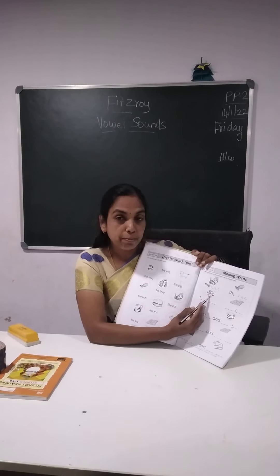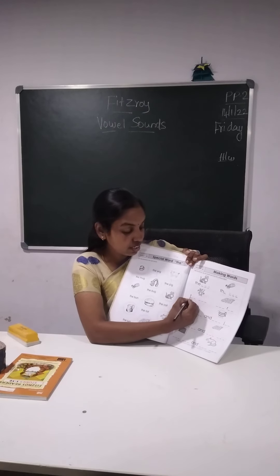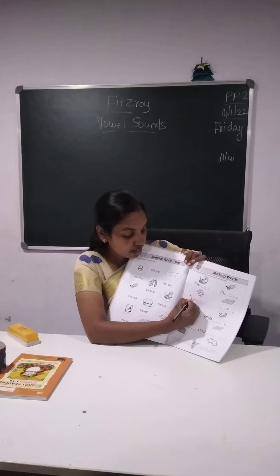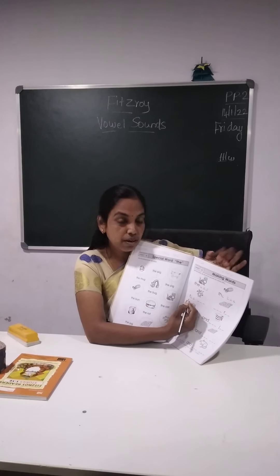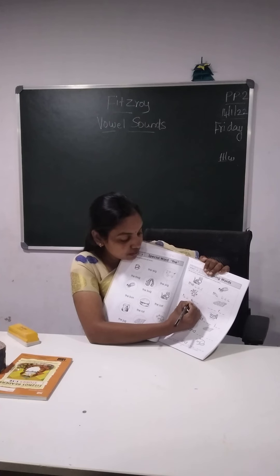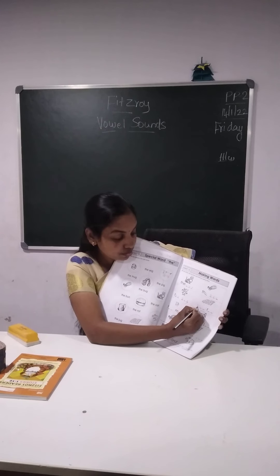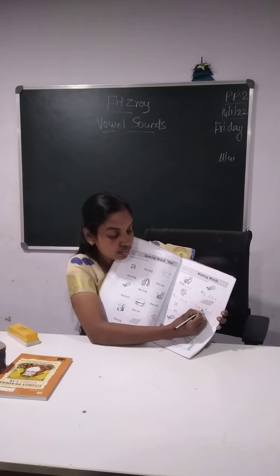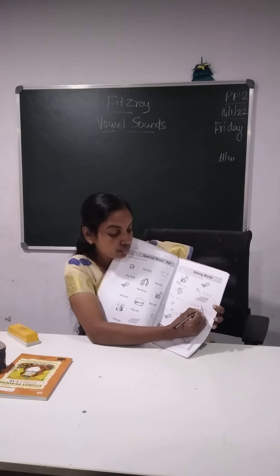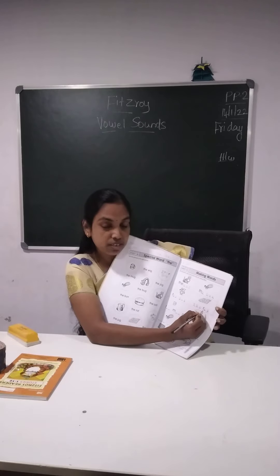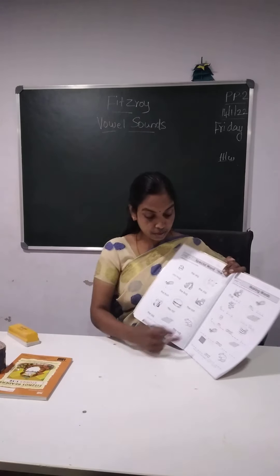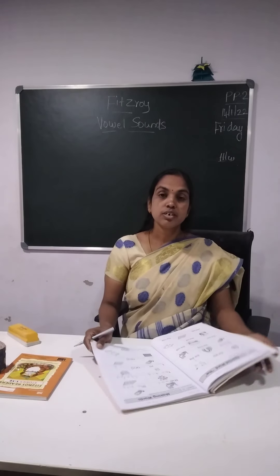Next: this is pig. What you will write? The pig. Next: this is rug. So what you will write here? T-H-E, rug. Same way, the remaining ones — one, two, three — you will be doing as homework.